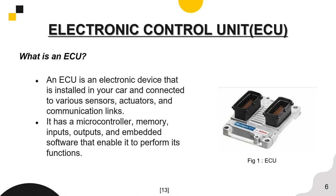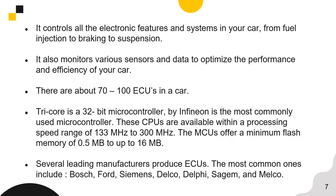ECU stands for Electronic Control Unit. An ECU is an electronic device installed in your car and connected to various sensors, actuators, and communication links. It has a microcontroller, memory, input, output, and embedded software that enable it to perform its functions. It controls all electronic features and systems in your car from fuel injection to braking to suspension. An ECU was invented mainly to improve fuel efficiency and to control pollution. It also monitors various sensors and data to optimize performance and efficiency. There are about 70 to 100 ECUs in a high-end vehicle.